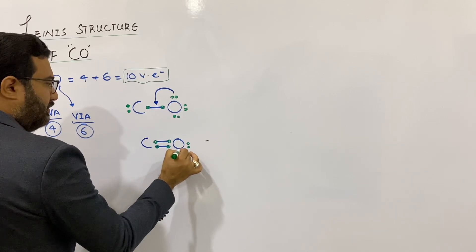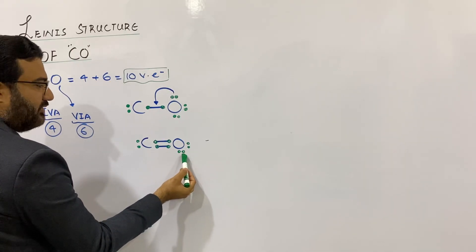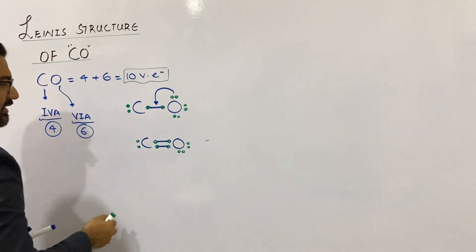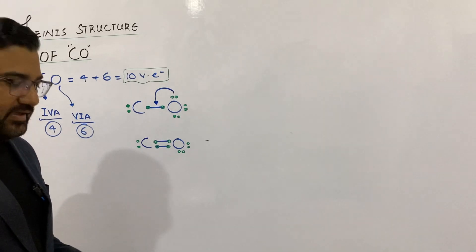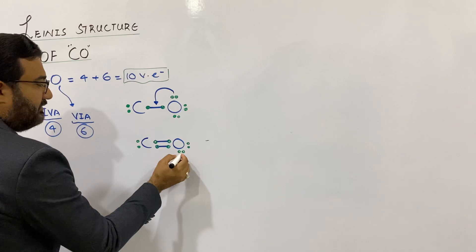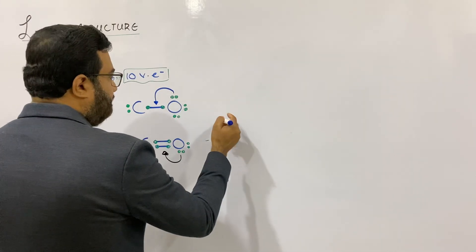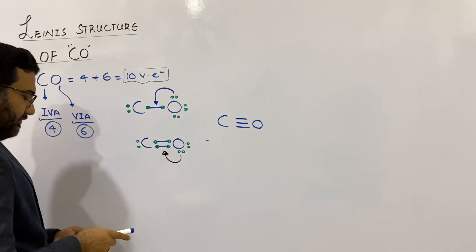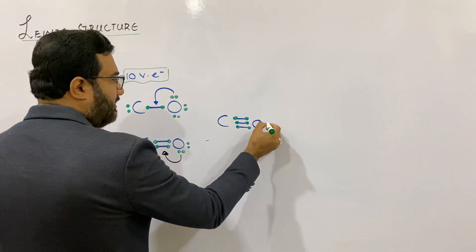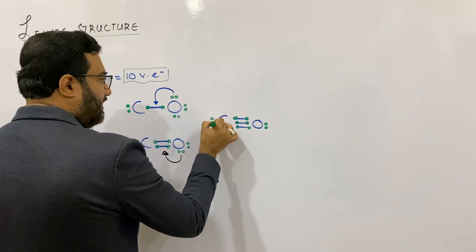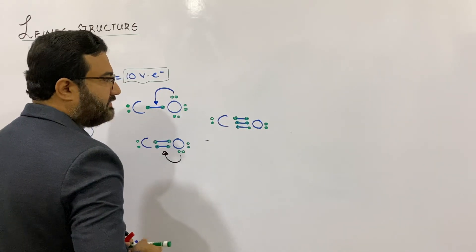Oxygen will now have only two lone pairs of electrons and one lone pair will be with carbon. The octet of oxygen is completed again — four electrons as lone pairs and four electrons as bond pairs. But carbon is now having 1, 2, 3, 4, 5, 6 electrons — still only six valence electrons, so its octet is yet incomplete. Again, oxygen will use one of its lone pairs to convert the double bond into a triple bond. Finally, C triple bond O. There will be six electrons in the form of three bond pairs between oxygen and carbon. Oxygen will have one lone pair and carbon will also have one lone pair. In this way the octets of both carbon and oxygen are completed, and this is the structure of carbon monoxide.